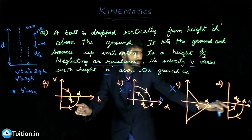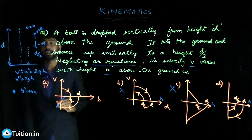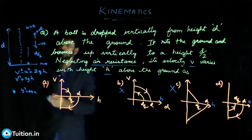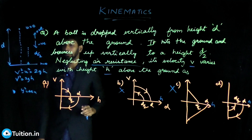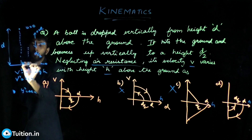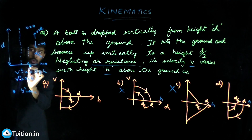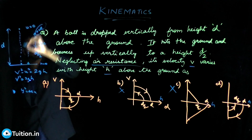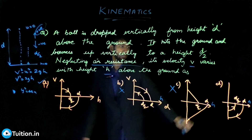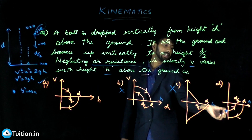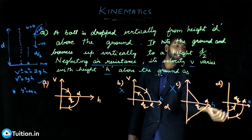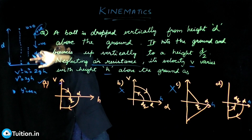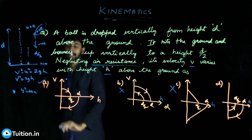After bouncing back, at h = 0, the velocity becomes 1/√2 times what it was before striking the ground — that's why it can only reach d/2. From zero to d/2, the velocity is increasing but in the positive direction, because upward is positive. The only graph that satisfies all these conditions — parabolic shape, negative velocity going down, positive velocity going up — is this one. So this is the answer.